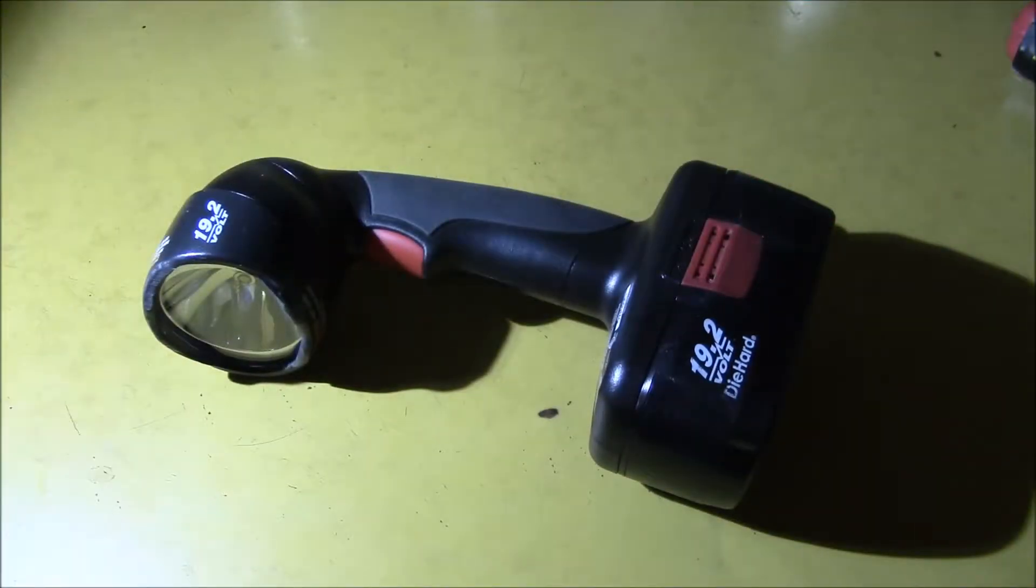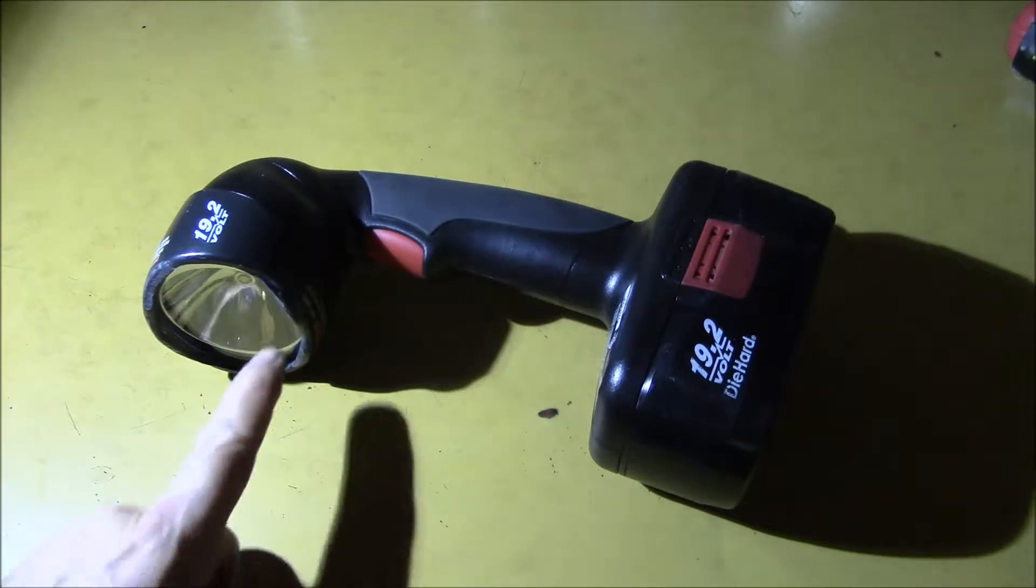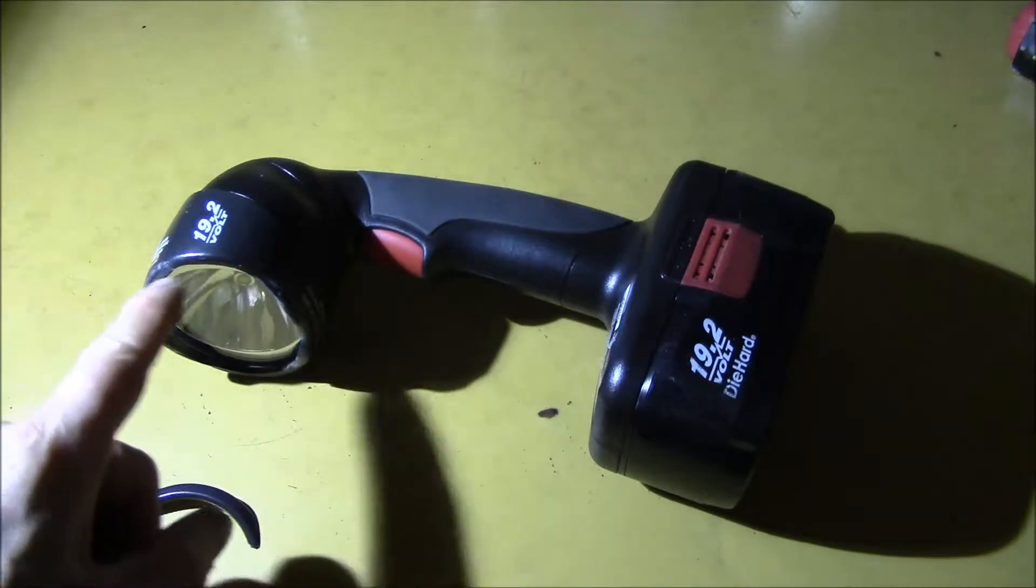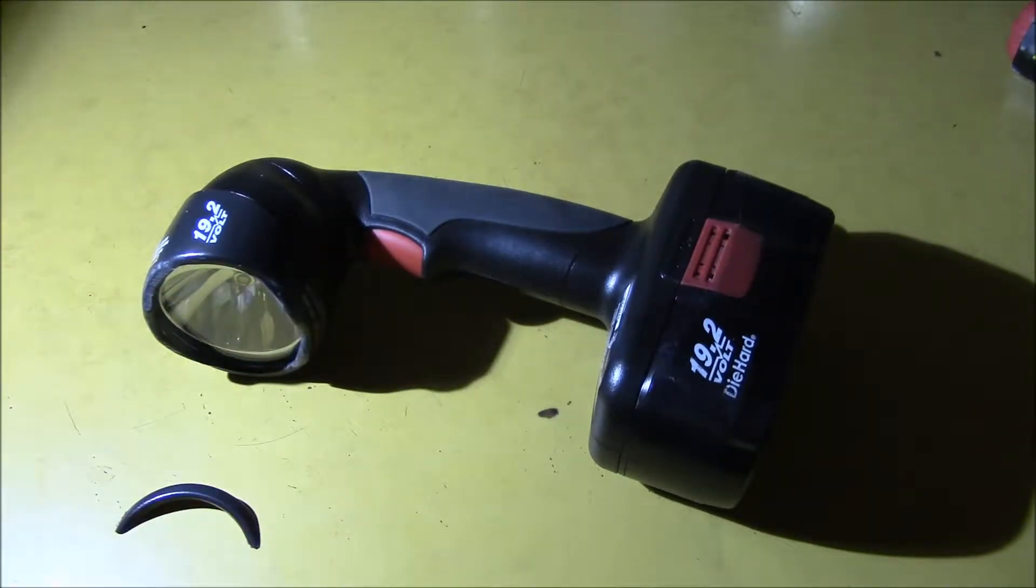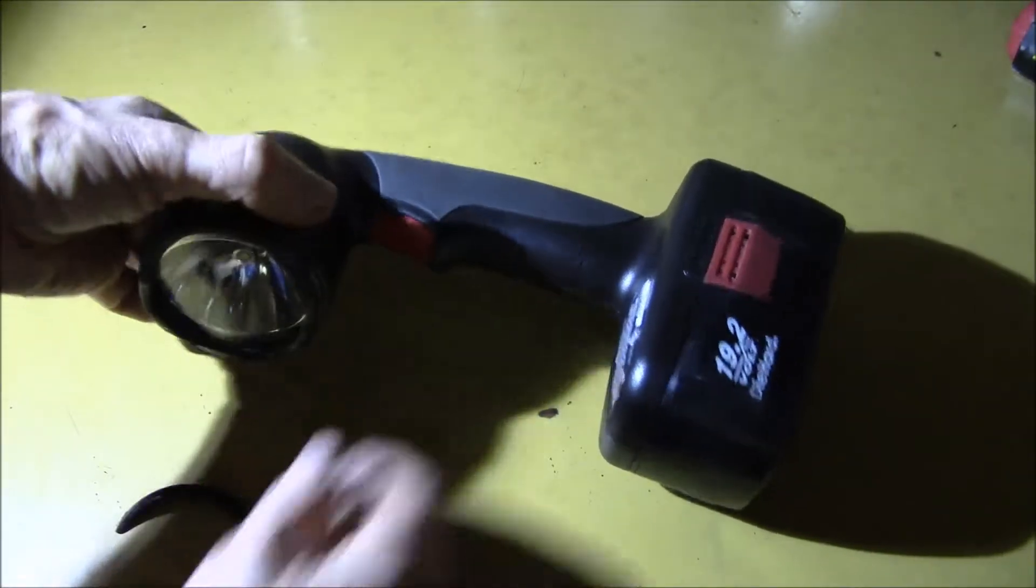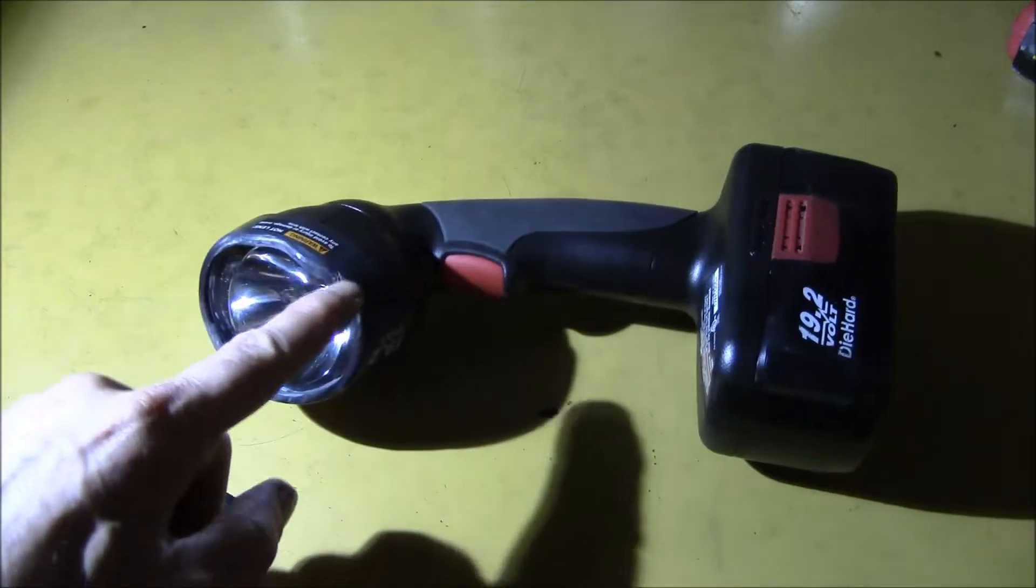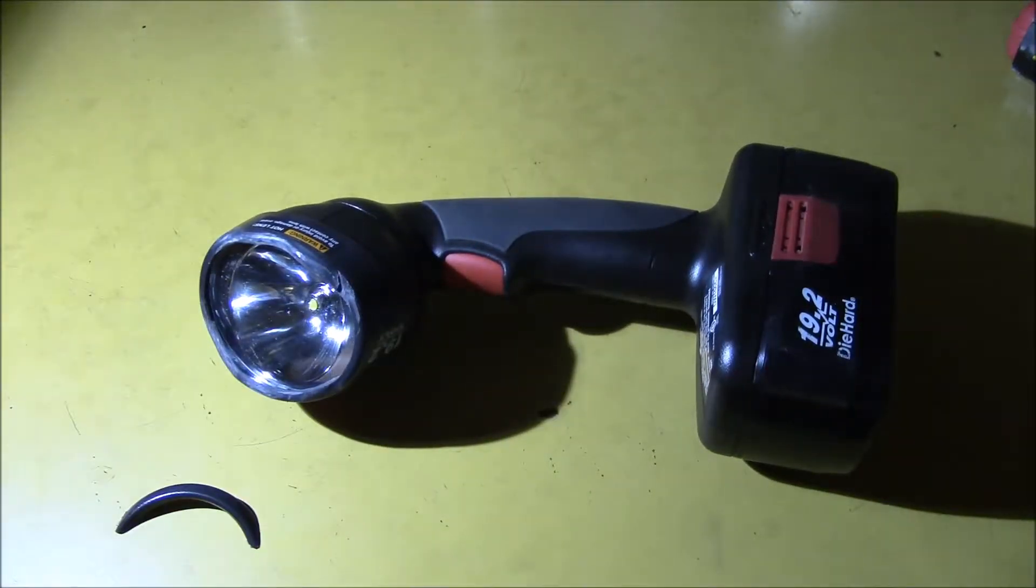Just did one little update here on this light. I had these little pieces of plastic that were stuck up here blocking the side of the light, so I took and trimmed those off, as you can see there. I cleaned it up a little bit. I've got to sand a little more in there to get that smoothed out.